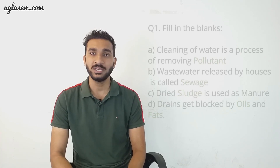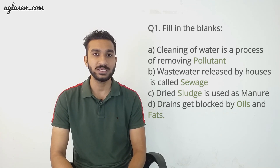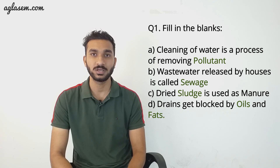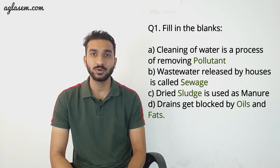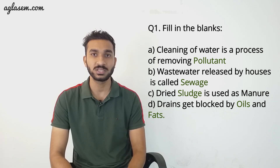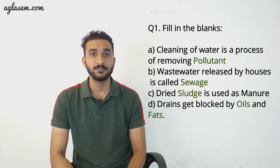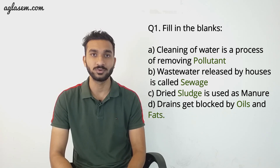Question number 1: Fill in the blanks. Part A: Cleaning of water is a process of removing — answer is pollutants. Part B: Wastewater released by houses is called — answer is sewage. Part C: Dried — is used as manure — answer is sludge.